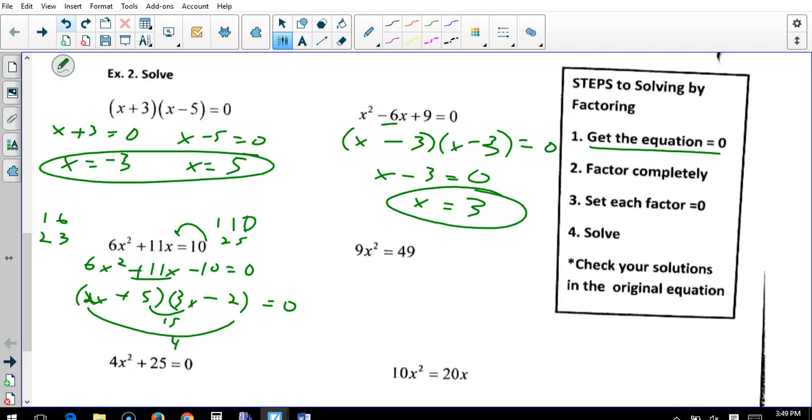And now I set them equal to 0. 2x plus 5 equals 0 and 3x minus 2 equals 0. Add 2 and divide by 3, that's 2 thirds. And subtract 5 and divide by 2. That equals negative 5 halves. And there are my 2 answers: positive 2 thirds and negative 5 halves.